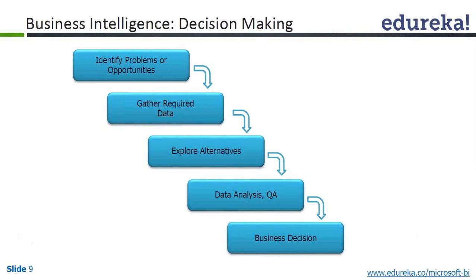So they identify the problems and market opportunities. Once they have identified the business problems and market opportunities, they decide what data they need and in what format so they can take a better decision. They get the required data, explore alternatives — whether they can do things with this data or if they have any other alternative — and then they do the data analysis, get the reports, and take a business decision.